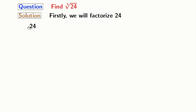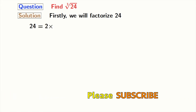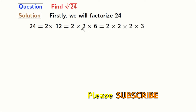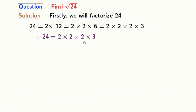24 is an even number, so it will be divisible by 2, and we get 24 equal to 2 times 12. Again, 12 is an even number, so we get 12 equal to 2 times 6. And 6 is equal to 2 times 3. So finally we get 24 is equal to 2 times 2 times 2 times 3.